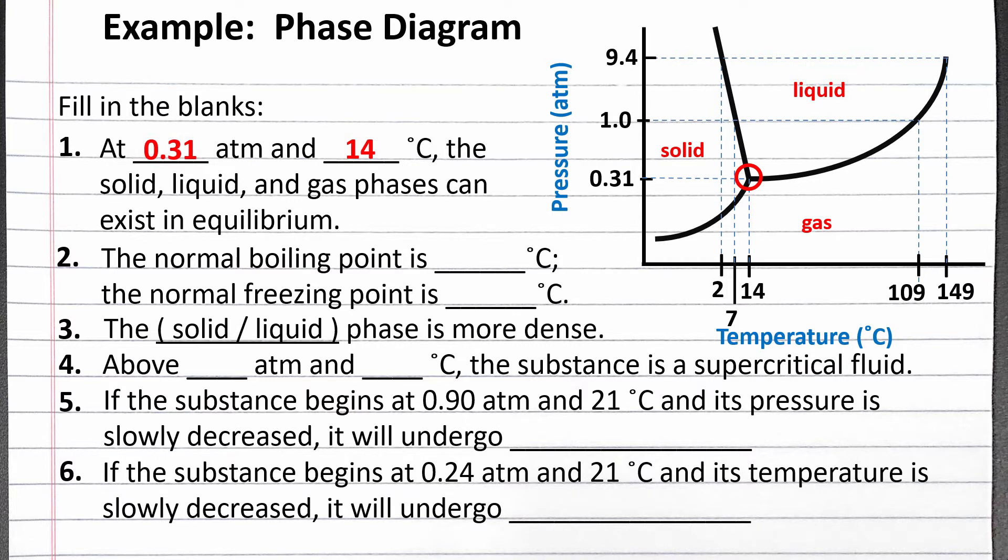Next we need to find the normal boiling and freezing points. Normal means one atmosphere, so we can draw a horizontal line across one atmosphere and see at what temperatures it crosses the fusion and vaporization curves. The normal boiling point is 109 degrees Celsius, and the normal freezing point is 7 degrees Celsius.